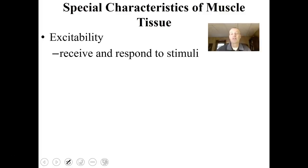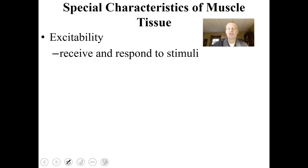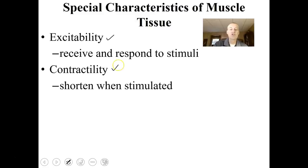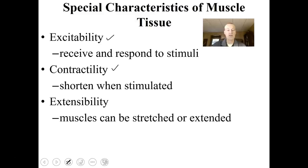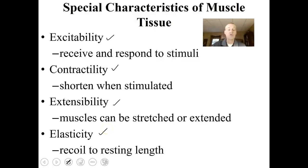Muscle tissue is very special, and muscle cells are very special too. There are certain characteristics that make them different from other types of tissue. Muscle tissue has the ability to receive and respond to stimuli, so they are excitable. Very few cells in the human body are excitable in that way and can change their voltage. They have the ability to shorten when stimulated — this is called contractility. They can be stretched or extended, giving them extensibility, and they have elastic recoil, giving them elasticity. So excitability, contractility, extensibility, and elasticity are special characteristics that make muscle tissue different from epithelial or connective tissue.